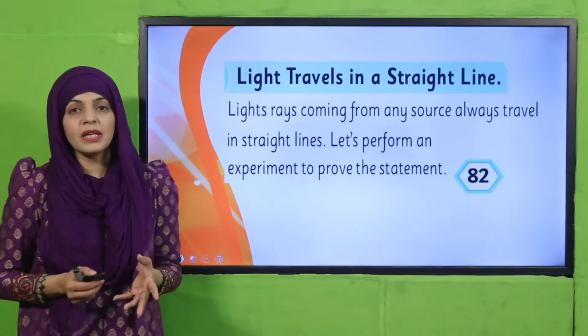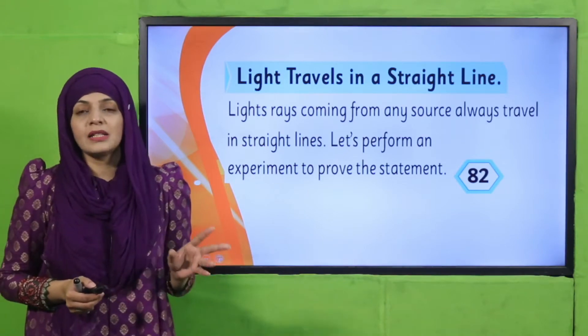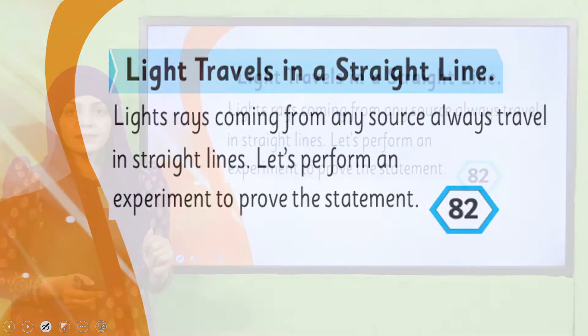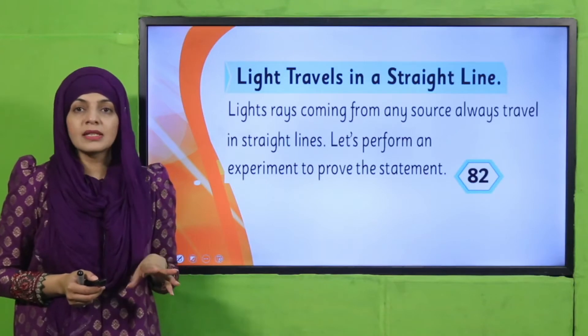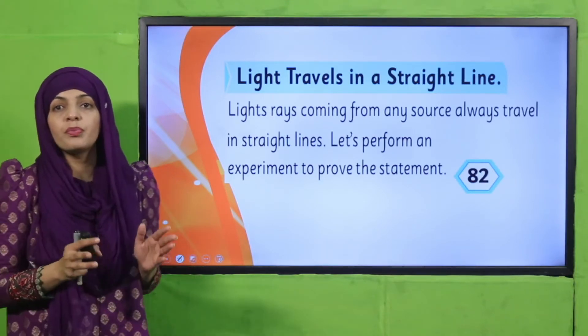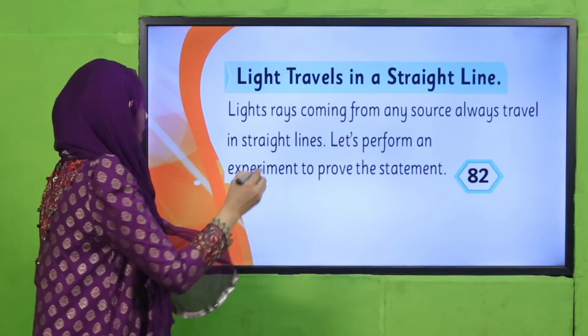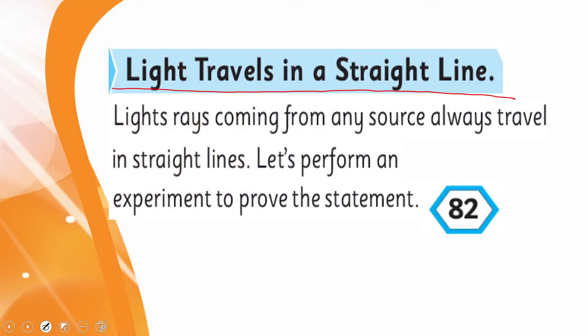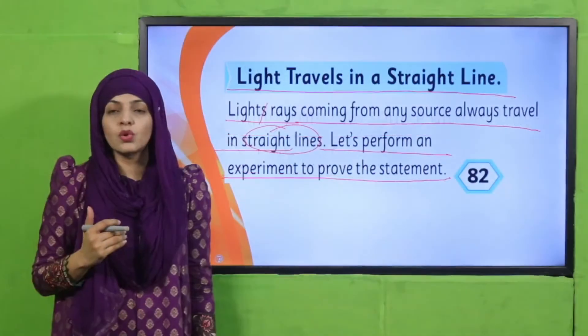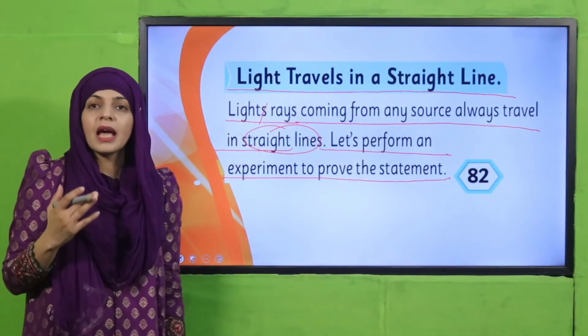Now let's quickly move towards the reading. Please open page number 82 in your Science 5 books. I hope everybody has opened the page. Now let's start the reading. Light travels in a straight line. Light rays coming from any source always travel in a straight line. Let's perform an experiment to prove the statement.